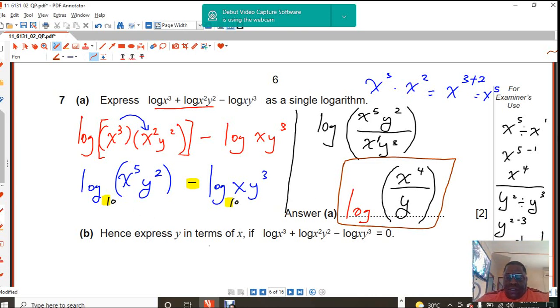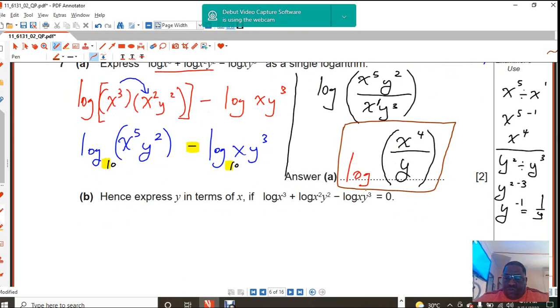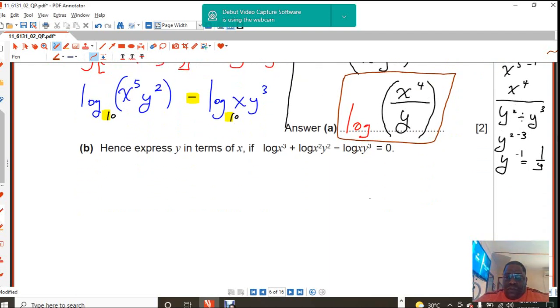Now we know what that is. So that gives me log x to the power of 4 upon y. So now they are saying if that business is equal to 0, you are supposed to find, express y in terms of x. That's like make y the subject.